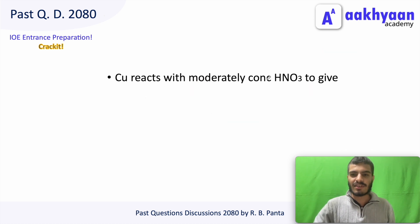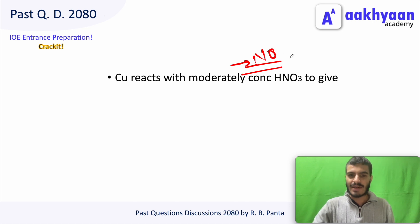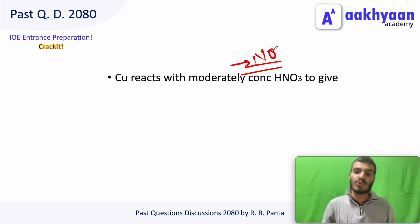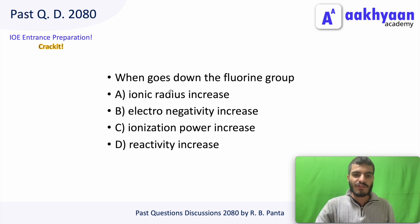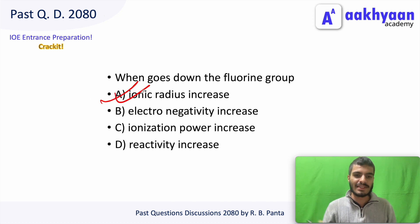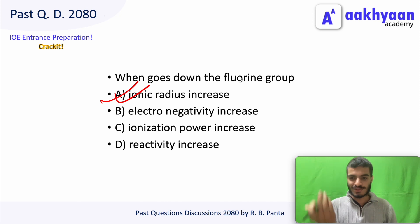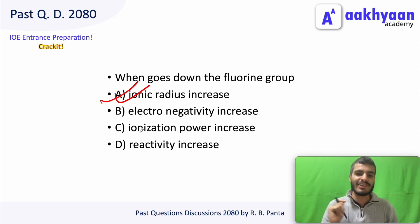When Cu reacts with moderately concentrated HNO3, you get NO. With highly concentrated HNO3, you get NO2. With dilute HNO3, you get N2O. Going down the halogen group, ionic radius increases while electronegativity decreases.